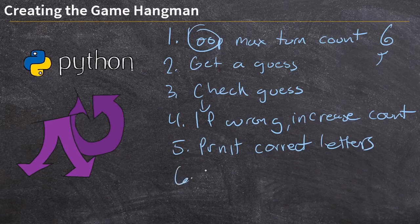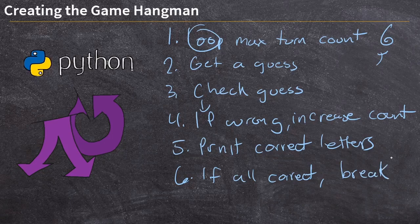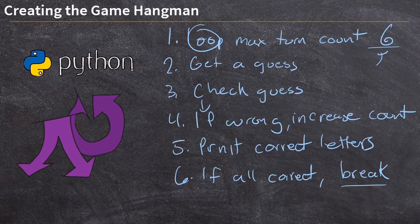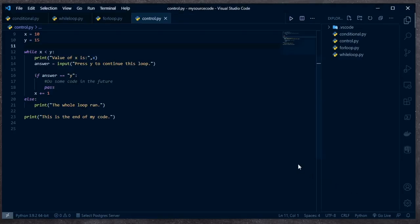And then lastly, if they've gotten them all then we're going to break out of our loop. If we have gotten them all correct and have not yet hit our count of six, we're going to break out and say you've won. This is the basic outline of how our code is going to work. We know how to do loops and ifs, we know how to do a break, we know how to print and get a guess with input, and we know how to check and compare all these things using our operators.